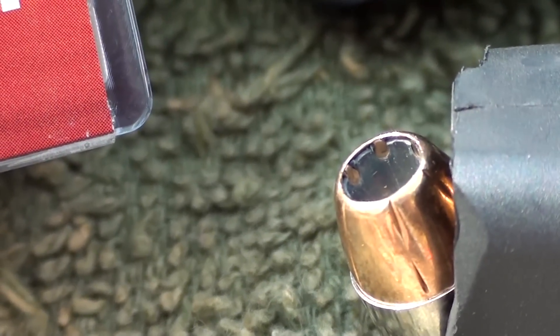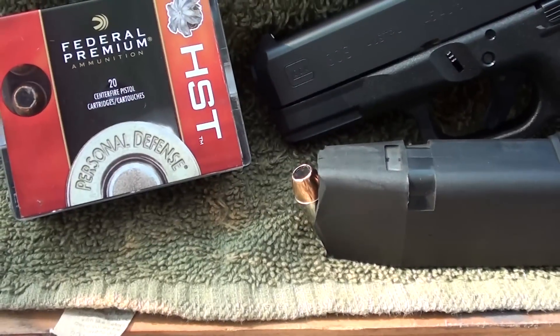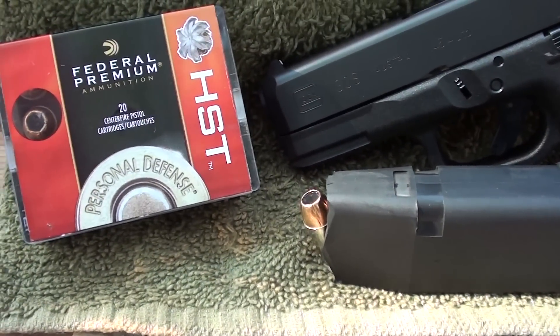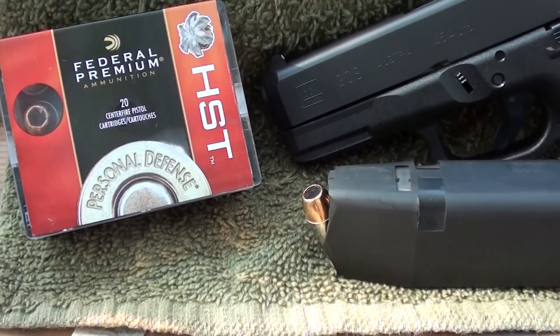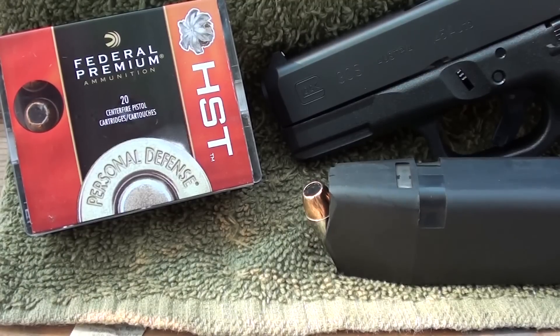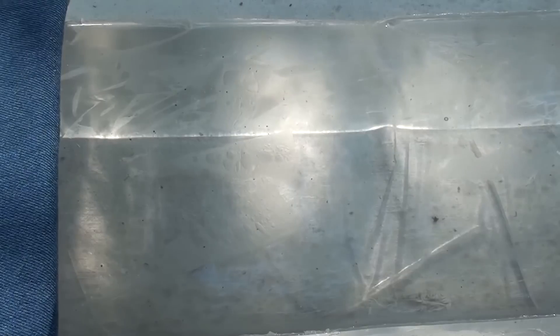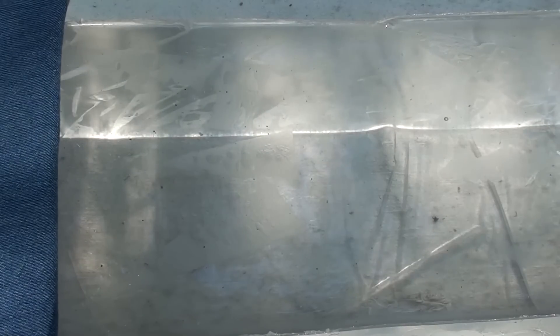Big old flying ashtray right there. The Glock 30s guys, Federal HST 230 grain, let's check it out. Four layers of denim, calibrated gel. Okay guys, here we go starting it off with a short barrel 45 Glock 30s with the bad boy HST round proving itself time and time again. Let's see what it does out of the 30s.